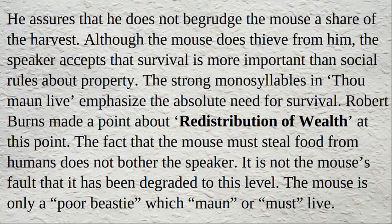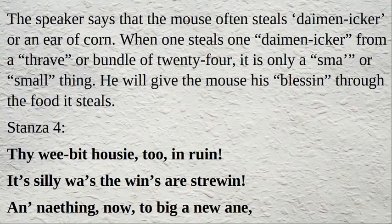The strong monosyllables in the poem emphasize the absolute need for survival. Robert Burns makes a point about redistribution of wealth here. The fact that the mouse must steal food from humans does not bother the speaker — it is not the mouse's fault that it has been degraded to this level. The mouse is only a poor creature that must live. The speaker says the mouse often steals a 'daimen icker,' or an ear of corn. When one steals one ear from a bundle of twenty-four, it is only a small thing. He will give the mouse his blessing through the food it steals.